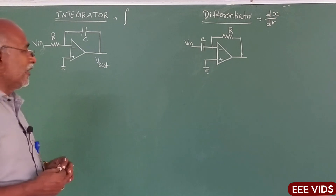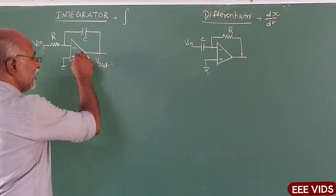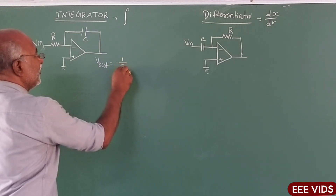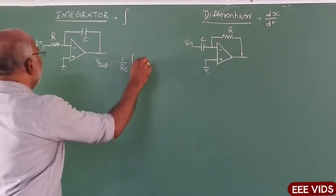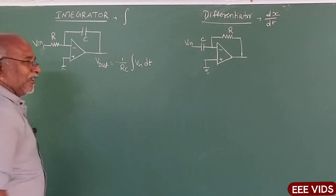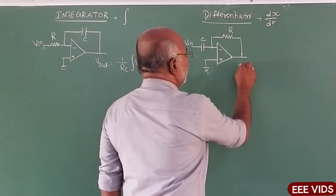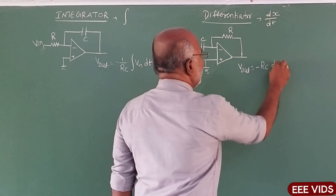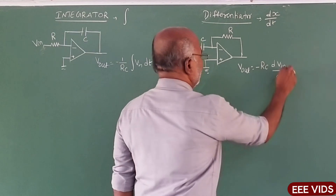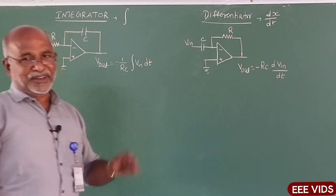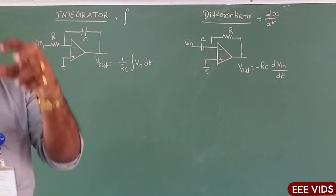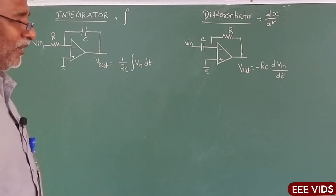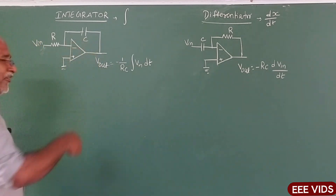So, this is the output contribution formula. For a non-inverting amplifier: V out is equal to minus 1 by RC, integral of V in into dt. Whereas for the differentiator: V out is equal to minus RC into dV in by dt. This formula is derived from the circuit. We can apply derivation of the path.